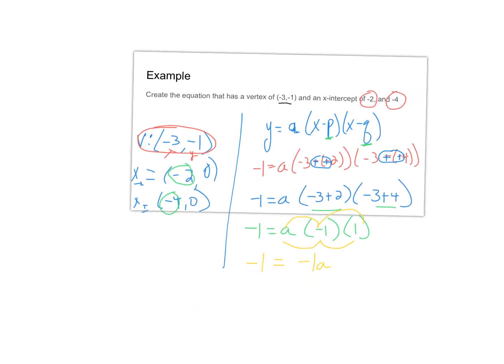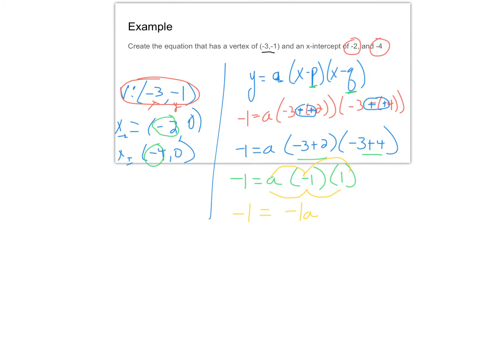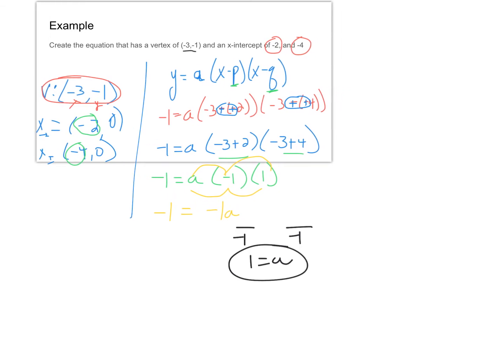Now at this point we solve the equation. We divide by negative one, so one is equal to A. That's wonderful, but that's not what we're looking for. We need to create our equation. So that was just the first part in all this.